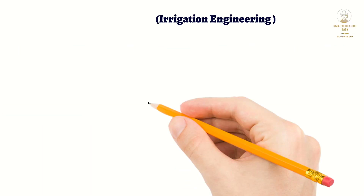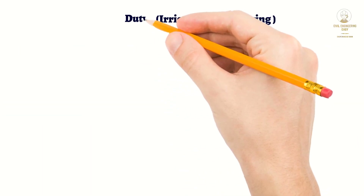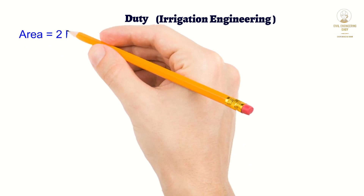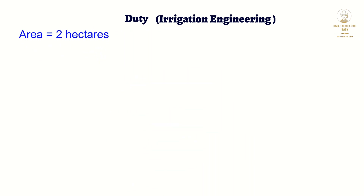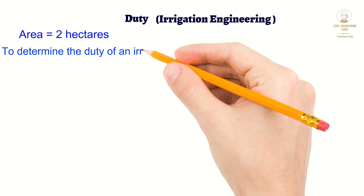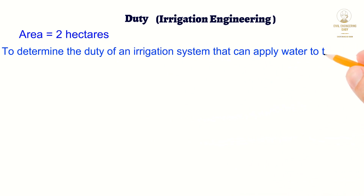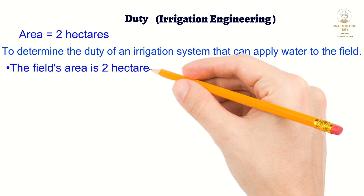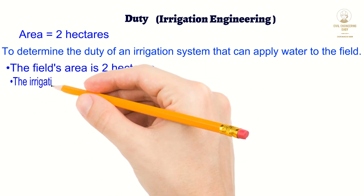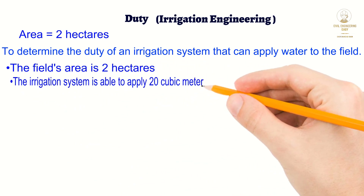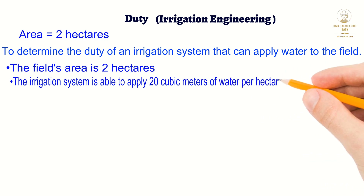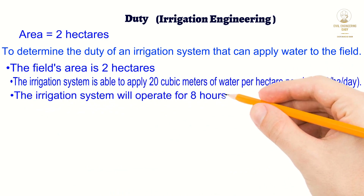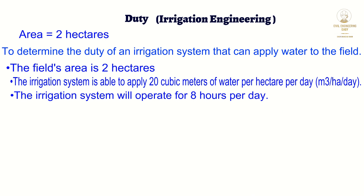Here is another numerical example of duty in irrigation engineering. Let's say we have a field with an area of 2 hectares and we want to determine the duty of an irrigation system that can apply water to the field. The area of the field is 2 hectares, the irrigation system is able to apply 20 cubic meters of water per hectare per day, and the irrigation system will operate for 8 hours per day.